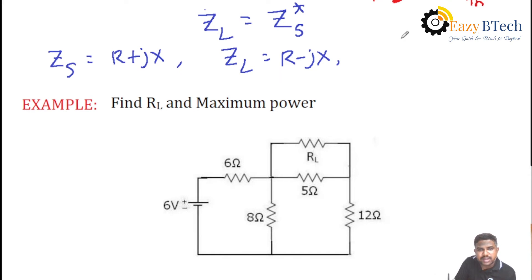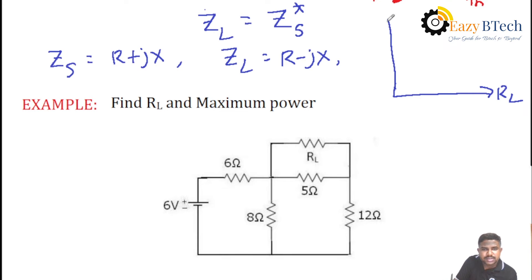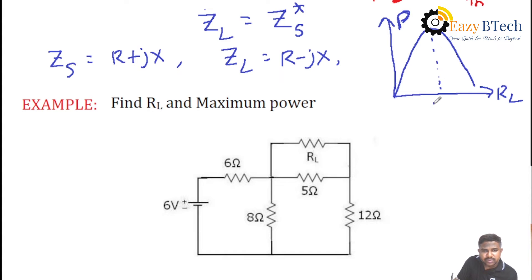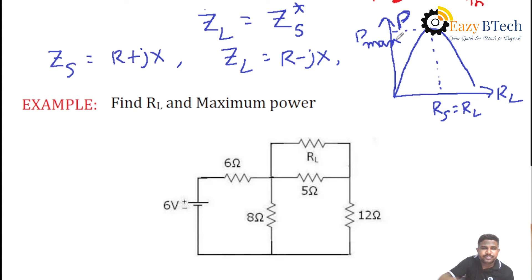If we draw a graph between load resistance and power delivered to the load, the graph gradually increases, reaches a maximum value, and then gradually decreases. You will get the maximum value at the condition Rs equal to Rl. At this condition, the power is maximum, that is, Pmax. This is the Maximum Power Transfer Theorem.